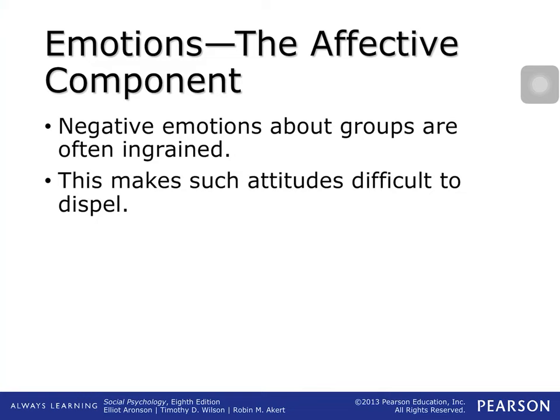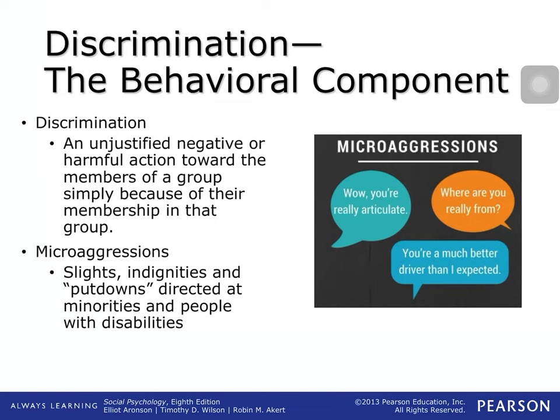Negative emotion about groups and the idea of prejudice is often ingrained. Once you have established stereotypes — which are the cognitive component — it's very difficult to budge them. Attitudes are really difficult to dispel when emotion and cognition are rooted very deeply together. Now we move to the final component, the behavioral component, which is discrimination. When it comes to discrimination, this is the action — the behavior. You can have certain prejudice that affects your feelings toward a particular group but never really act on them, and you can have thoughts about particular groups but again never really act on them. The behavioral component is where you actually act on it, and this is where discrimination comes in.